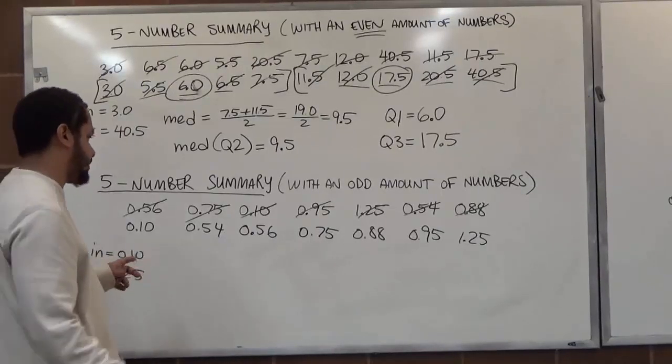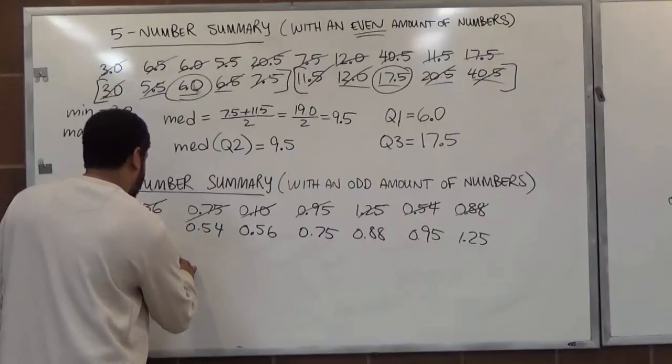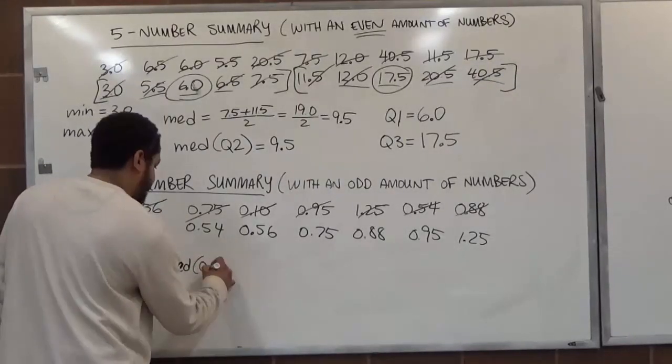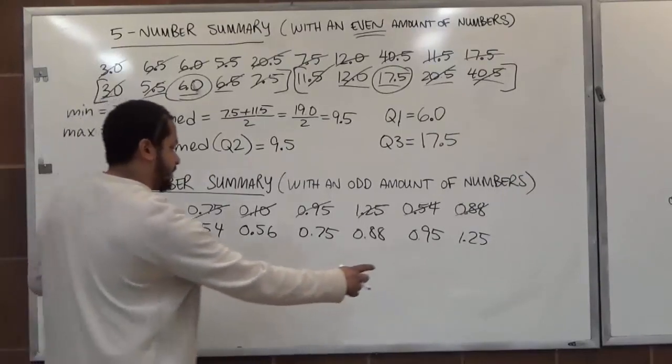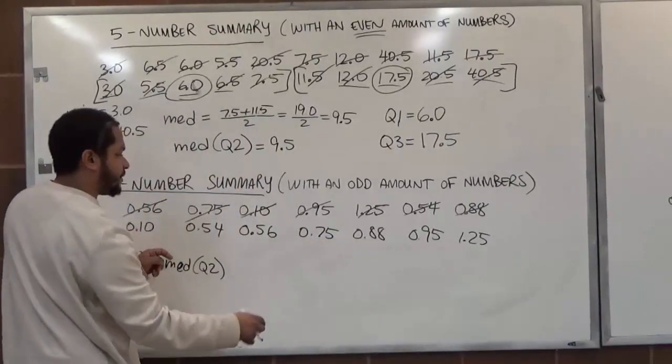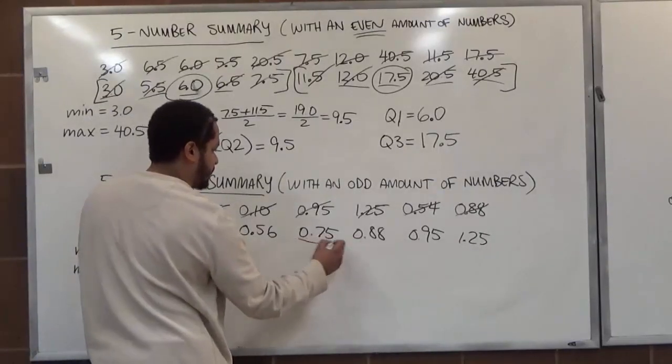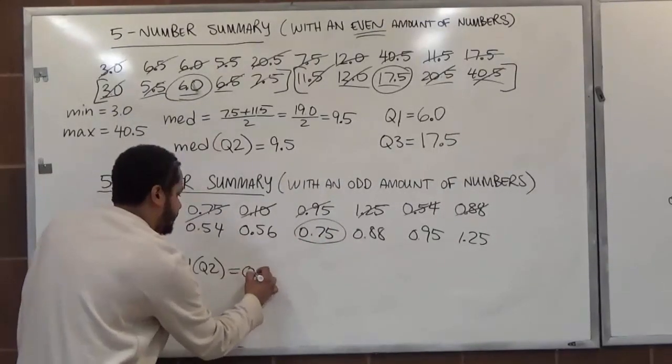Now the median, again, is coming off toward the middle term. In this case, our second quartile is going to have a value because we have an odd amount of numbers. So knocking off one at a time, we get five left in the middle. Knocking off two more, we have three, and two more, we have just one. So 0.75 for the middle term.